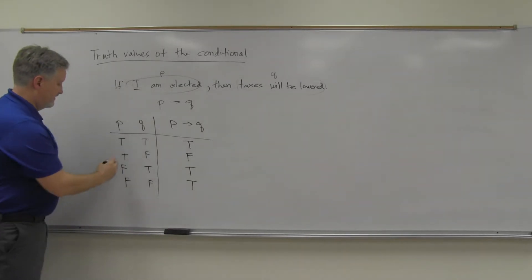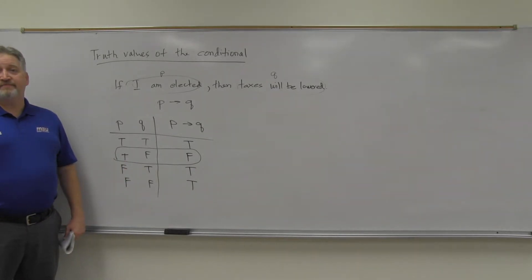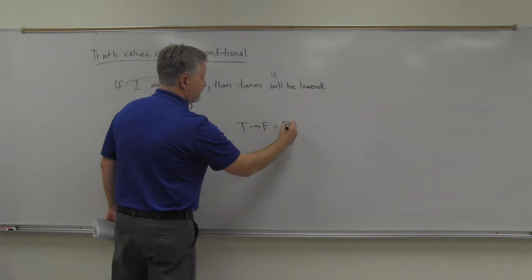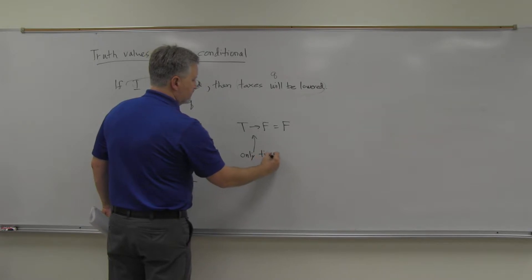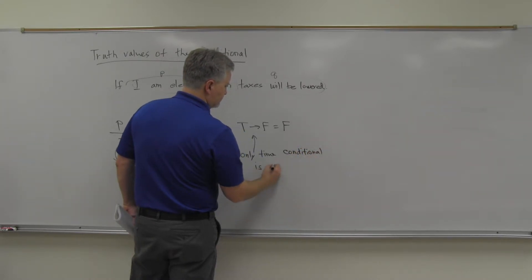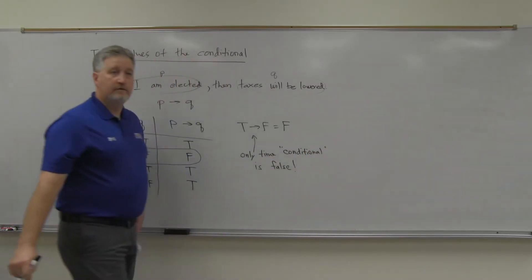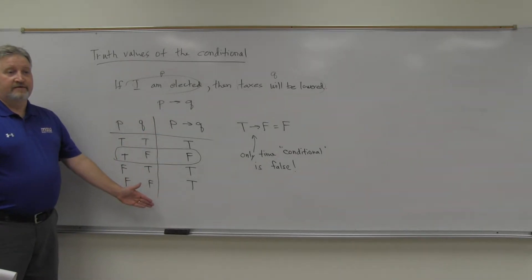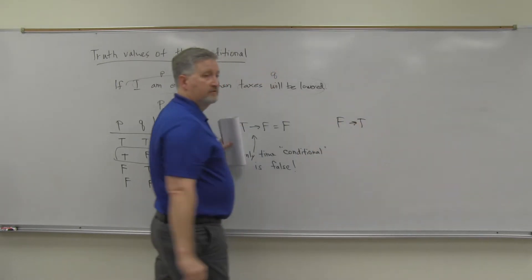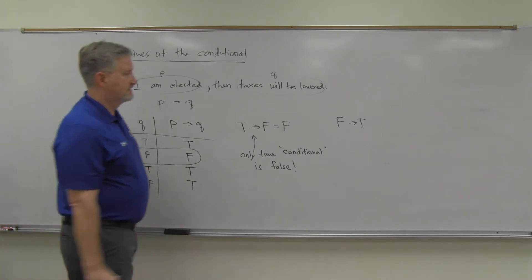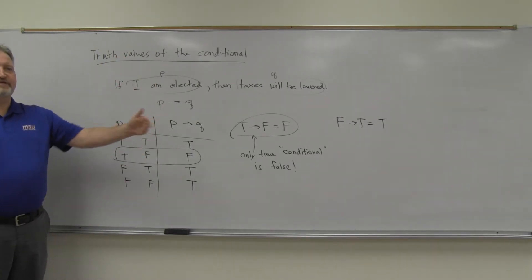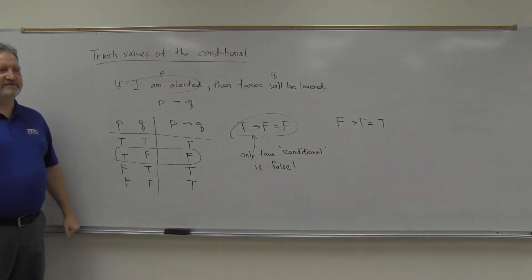So how can we summarize? That's the only time the if-then statement is false: T arrow F. That's the only time the conditional statement is false. Any other time, it's true. Notice it has to be T arrow F, because if you switch it around — F arrow T — that is true. F arrow F is true. T arrow T is true.